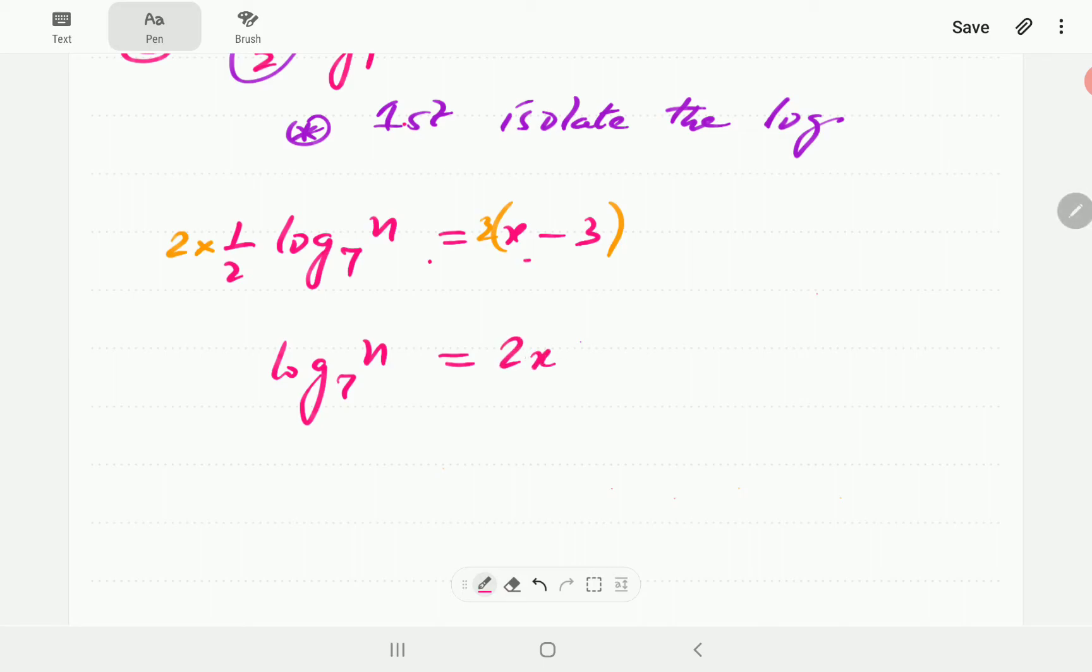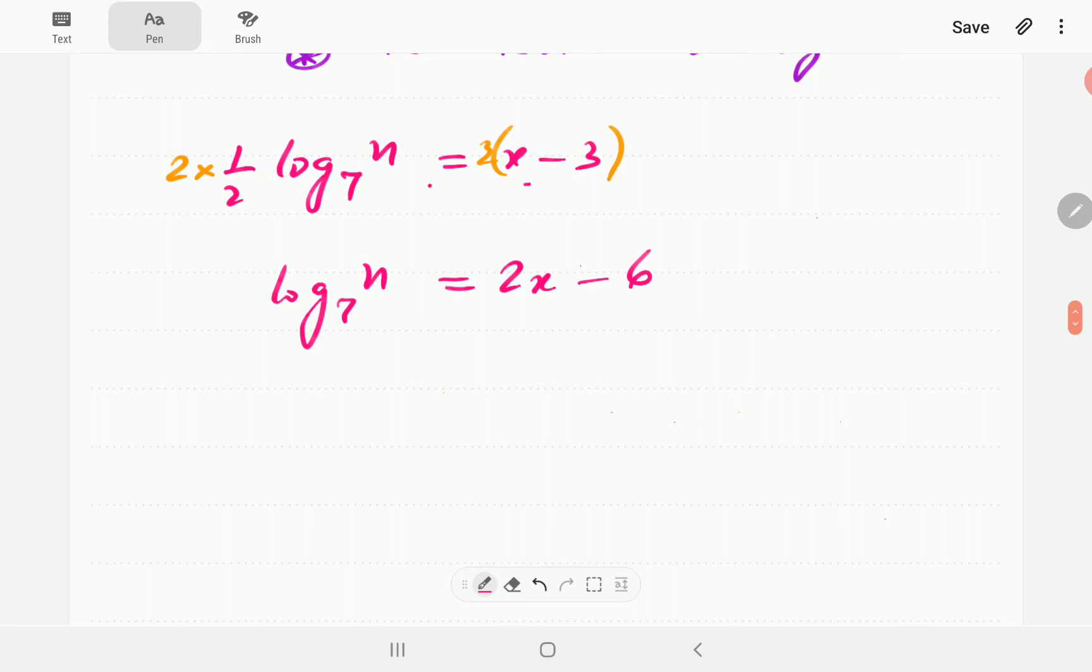On the right-hand side, we're going to have 2x minus 6. Now, we can do what we've been doing before. The base is 7. So, 7 raised to this power must give us that. 7 to the power 2x minus 6 is equal to n.